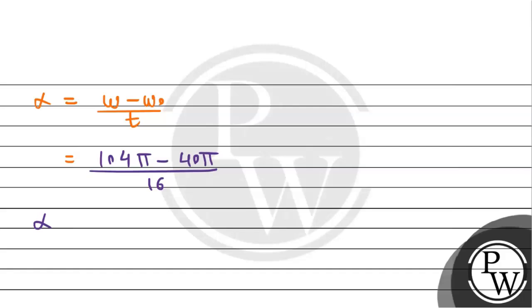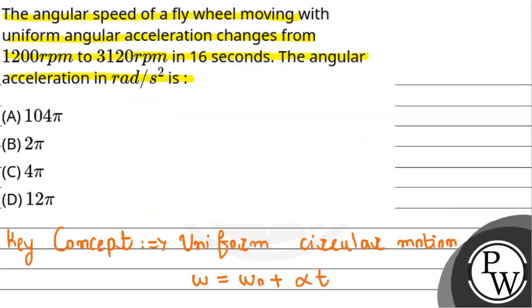On dividing, alpha comes out to be 4π radians per second squared. Therefore, this is the required answer to our question. According to the options, option C is correct.